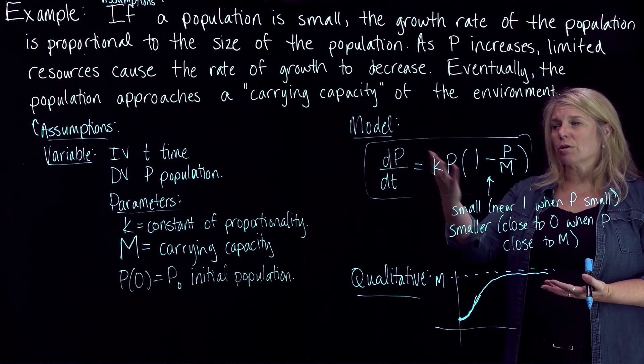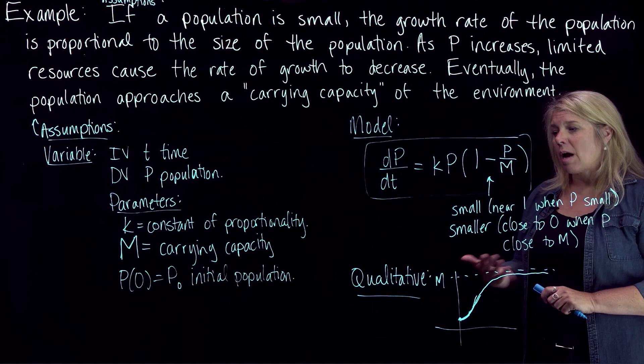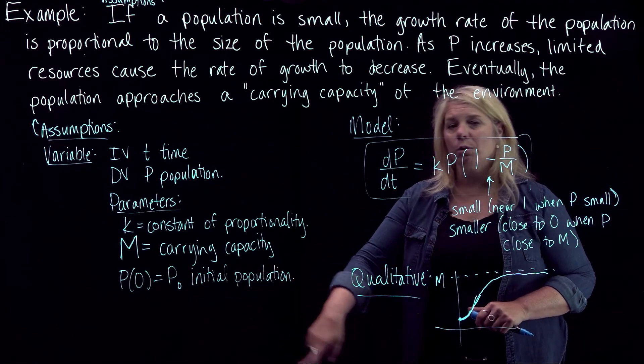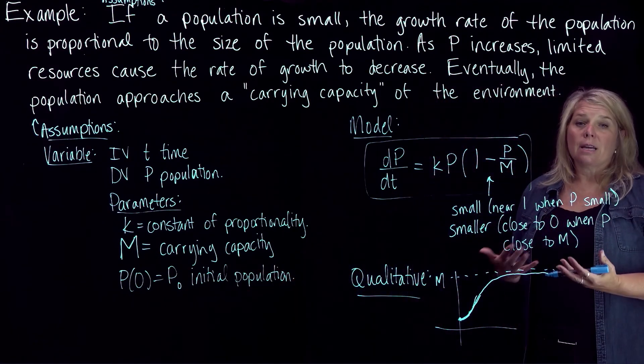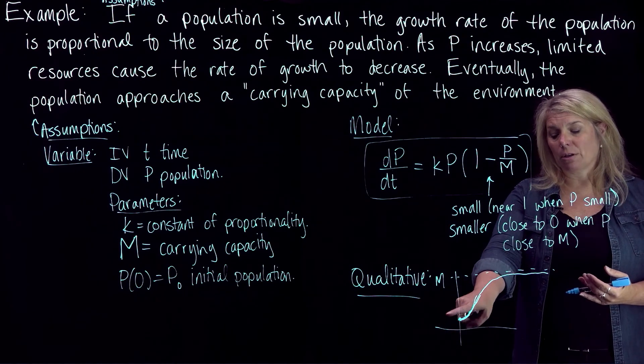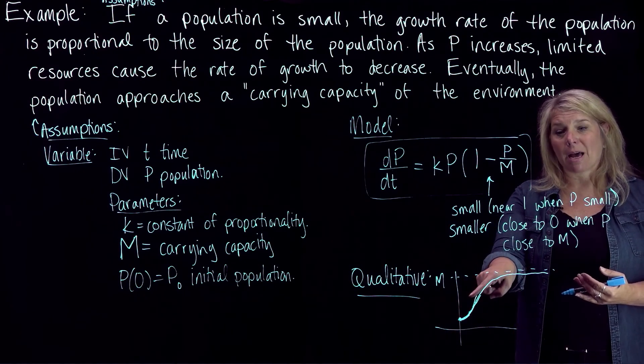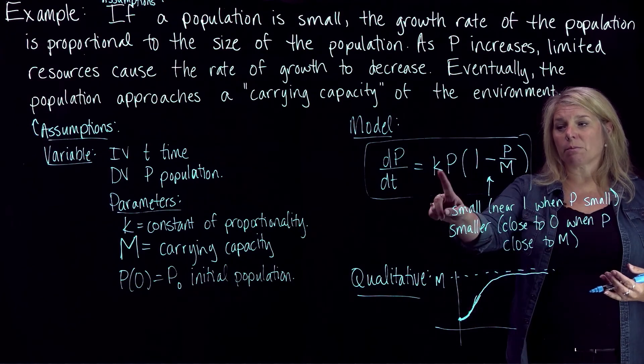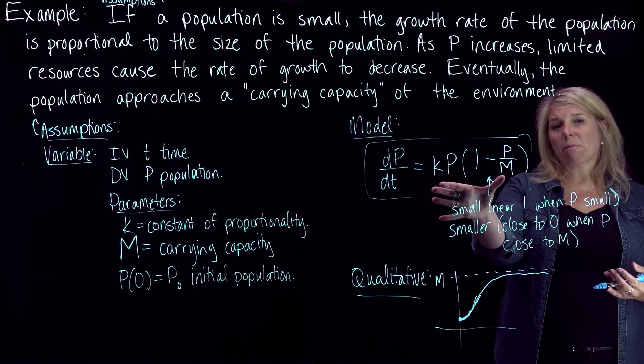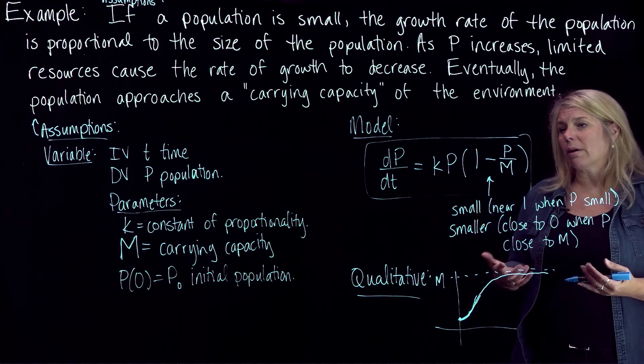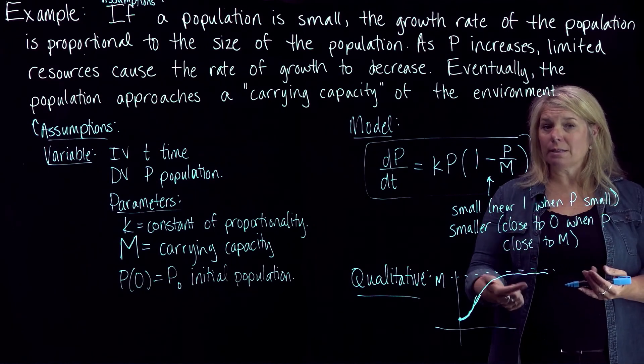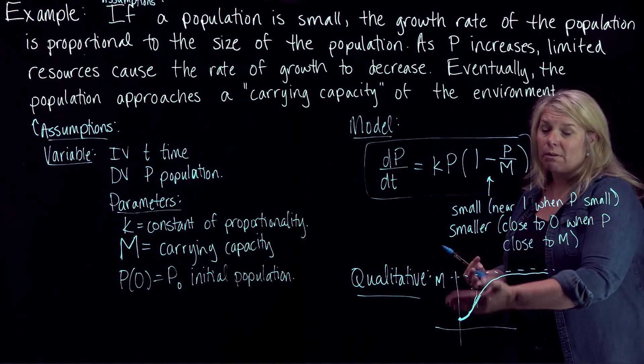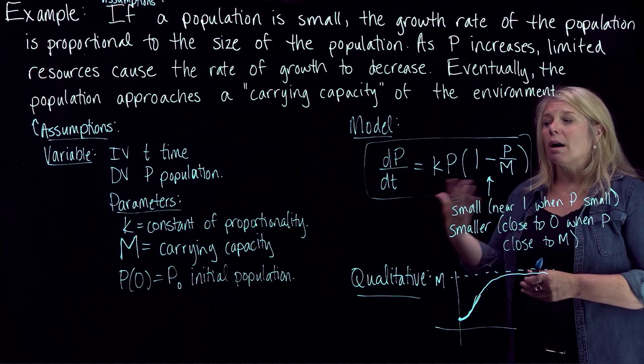So if we were trying to describe the growth of some particular population, perhaps we have some measurements of the initial population and then some other data values perhaps, and we'd want to make sure that they actually fit with our mathematical model. And if the data doesn't fit our model, then we make some adjustments, perhaps to our parameters. Maybe we had faulty assumptions about what the carrying capacity actually was. We make adjustments and we re-generate a new model with better data.